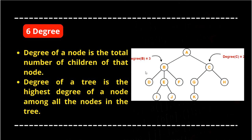Degree: degree is simply the number of children of a node. A has degree 2 because it has only 2 children. B has degree 3 because it has 3 children D, E, F. C has degree 2 because it has 2 children G and H. The degree of a tree is the highest degree of a node among all the nodes in the tree.